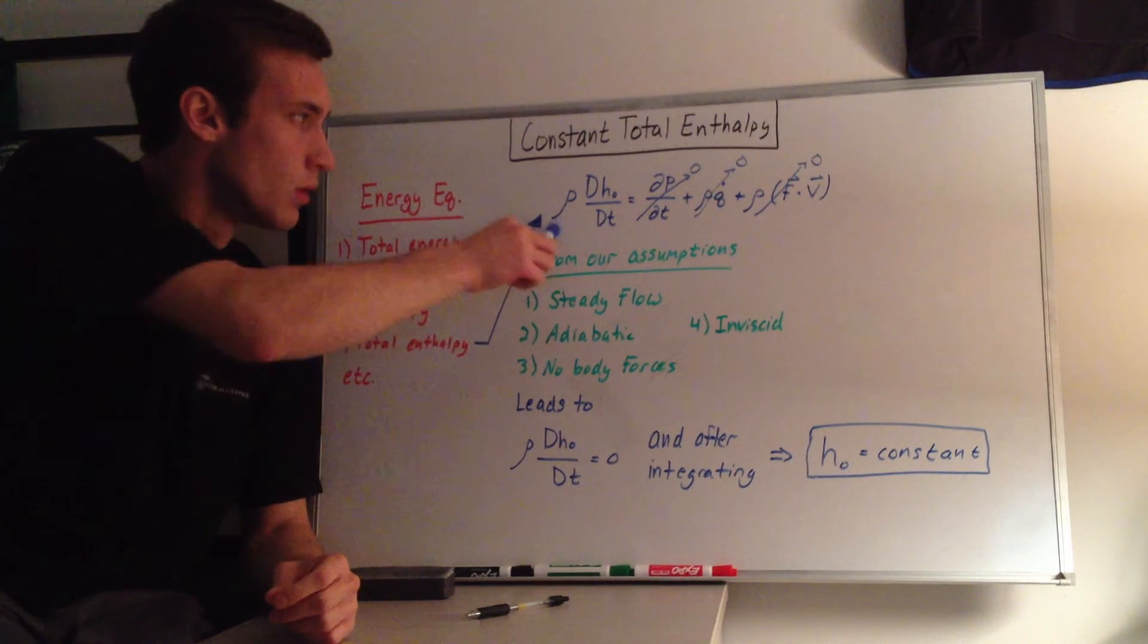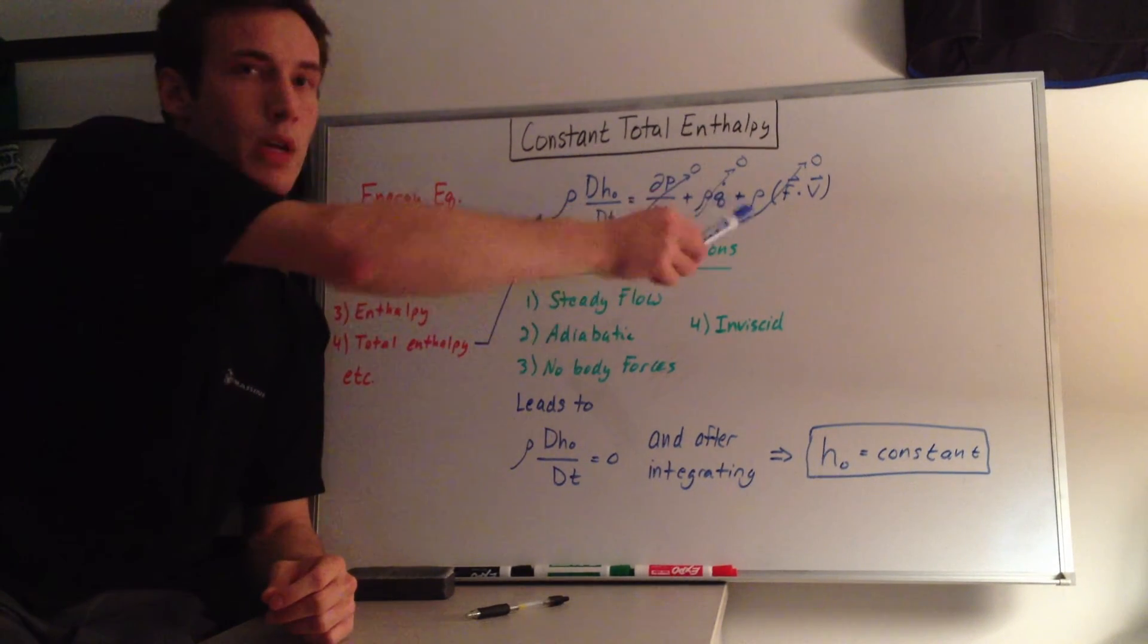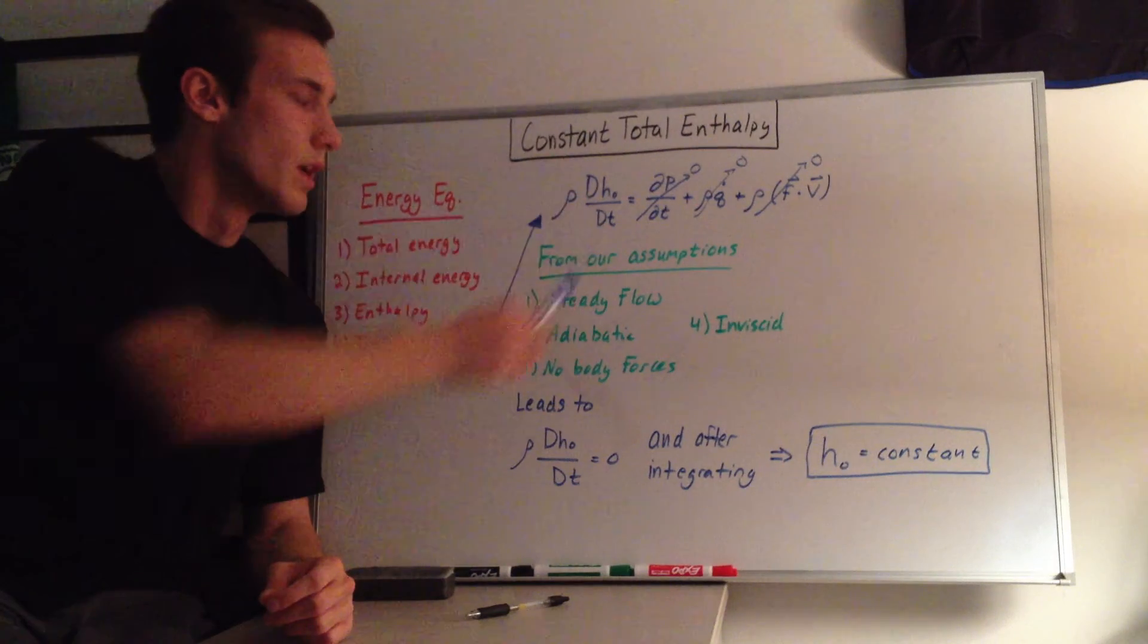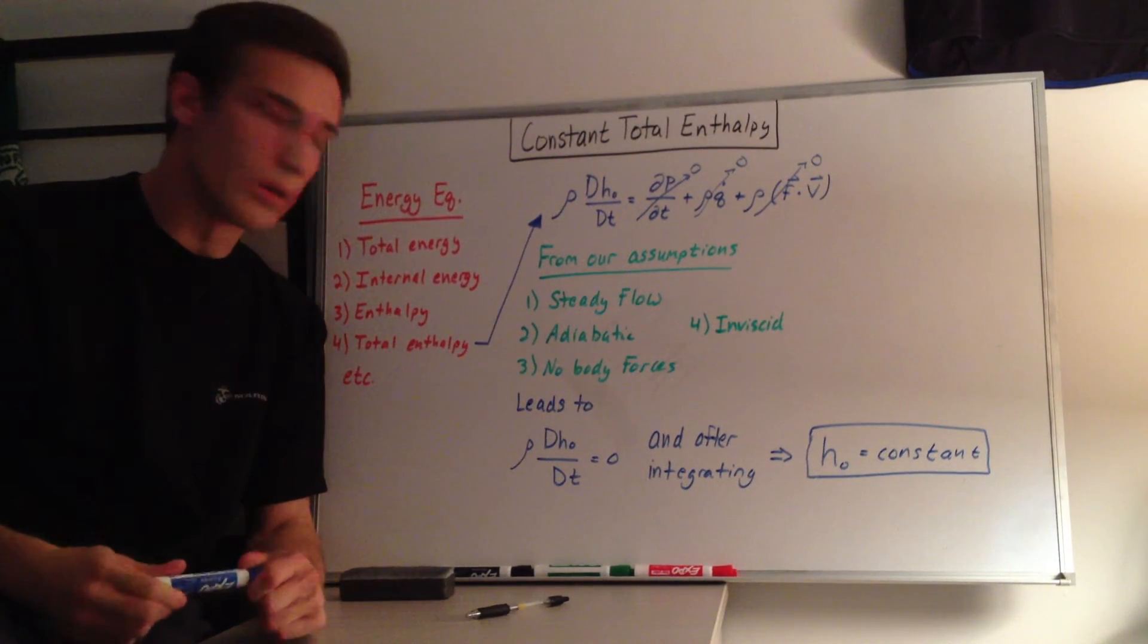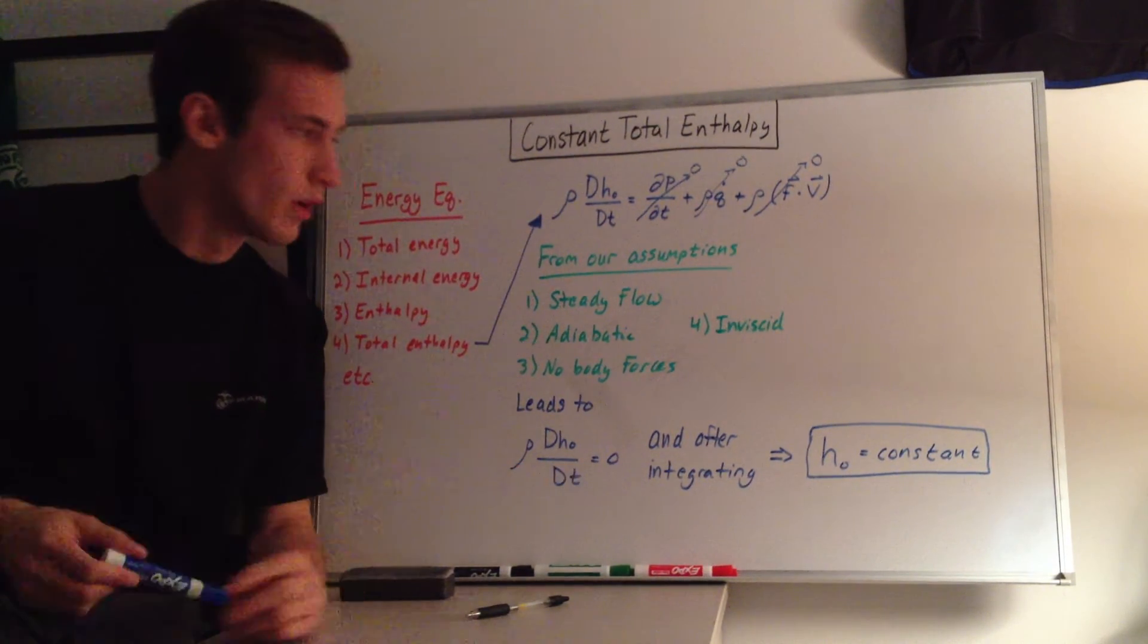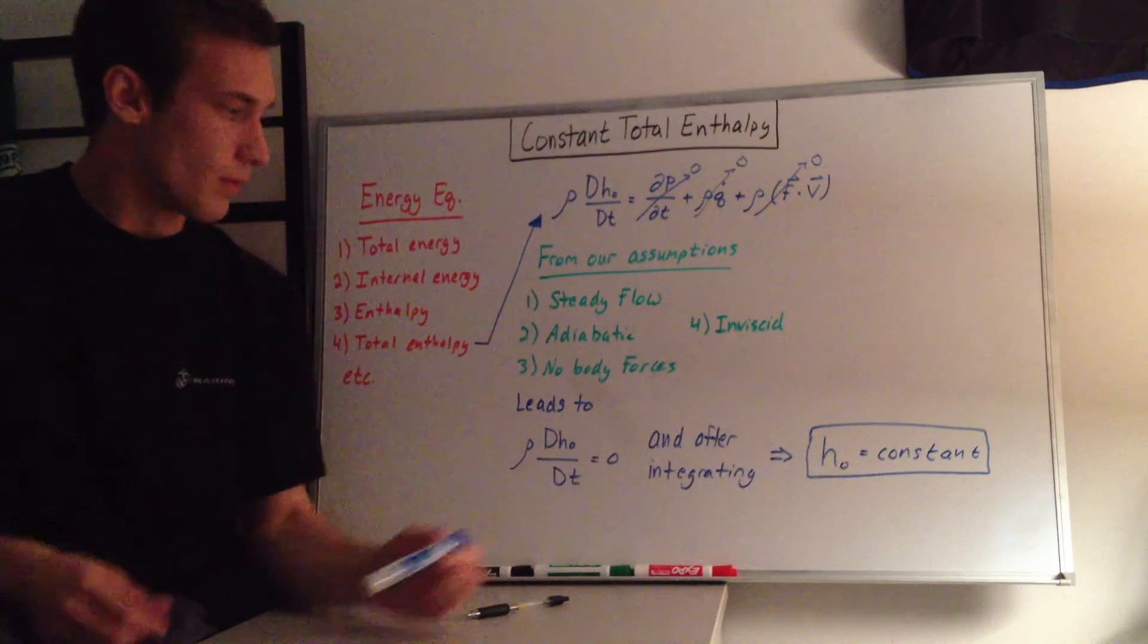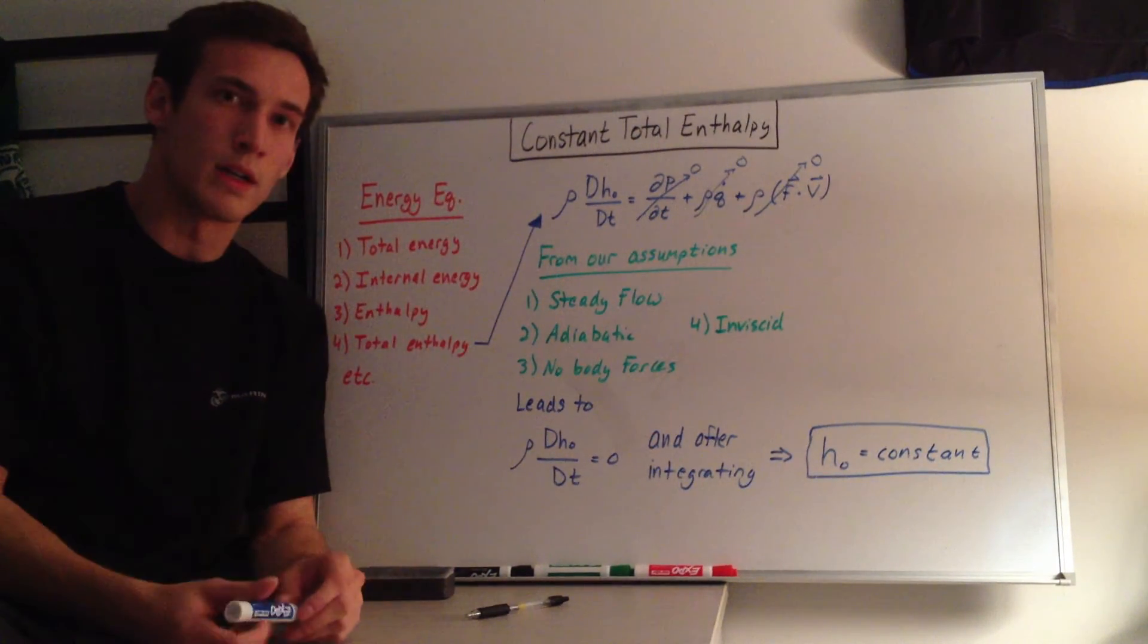So, this ends up leading to this left-hand side. We're canceling terms on the right-hand side. Rho dH naught dt is equal to zero. And then if you integrate this, you end up with the total enthalpy has to equal a constant.